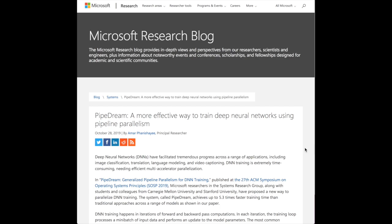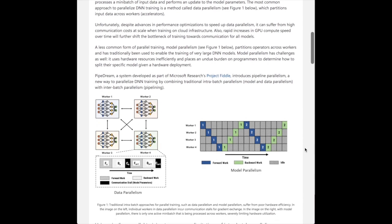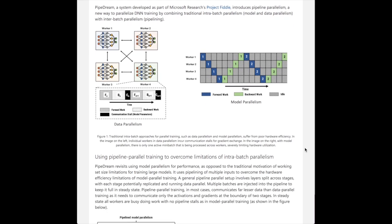Microsoft's research blog has published an update about PipeDream, a more effective way to train deep neural networks using pipeline parallelism. Pipeline parallelism is different from model and data parallelism. In data parallelism, different subsets of data are passed to different workers, each holding a copy of the neural network, which compute forward and back propagation and send gradients to a centralized server. Model parallelism distributes the model across multiple GPUs, which can be tricky for programmers. PipeDream is looking to improve efficiency of idle workers with model parallelism and make it easier for programmers to define and parallelize models.